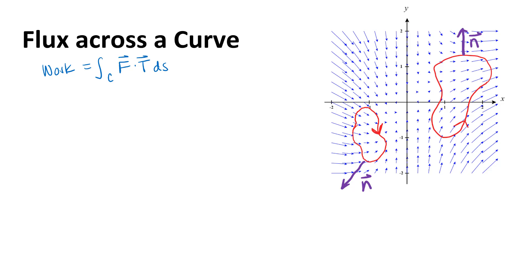The integral we're defining here is a flux integral, and its definition is really similar to what we did before. We can talk about a Riemann sum: partition the curve, choose points, calculate F vectors and normal vectors at every point, take the Riemann sum, and take the limit as the norm of the partition approaches zero. Instead of going through all that, I want to focus on how this definition differs from the work integral. One difference is that we used the unit tangent vector before, which we can leverage here. But for the n vector, we can't use the unit normal vector we used before.